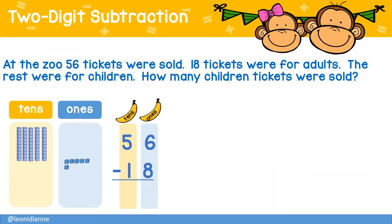Let's try one more. At the zoo, 56 tickets were sold. 18 were for adults and the rest were for children. How many children's tickets were sold? We've modeled 56 by showing five tens and six ones.